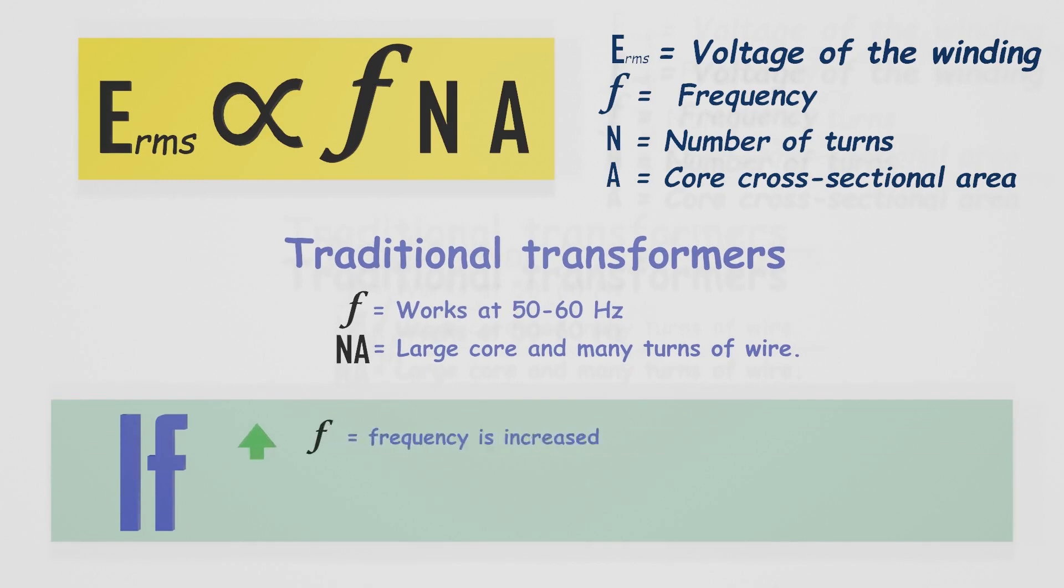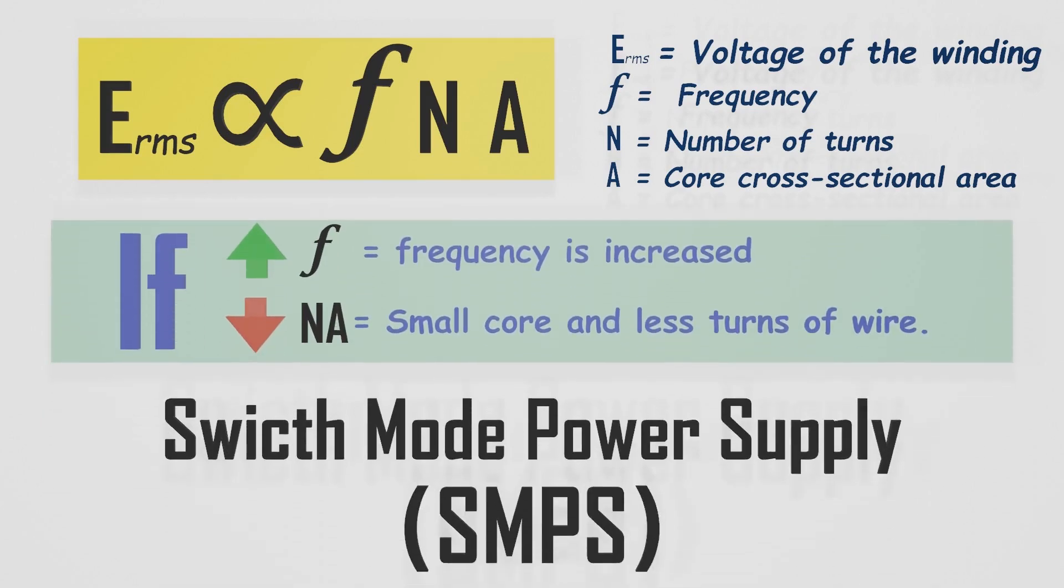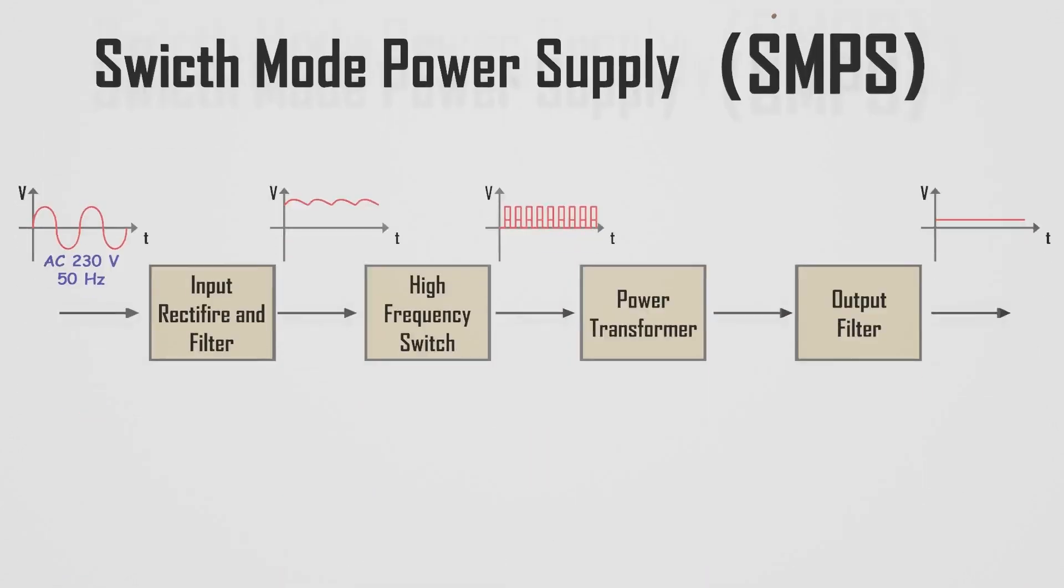But we can solve this problem if we have a way to increase the frequency of the current. Then we can use small coils in the transformer and reduce its size heavily. These kinds of power supplies are called switch mode power supplies, or SMPS. Let's see how this SMPS works.